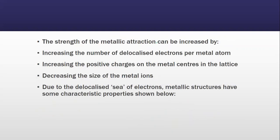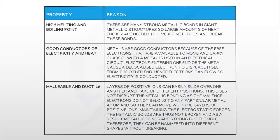The strength of the metallic attraction can be increased by increasing the number of delocalized electrons per metal atom, increasing the positive charges on the metal centers, and decreasing the size of the metal ions. Due to the sea of electrons, metallic structures have some characteristic properties.